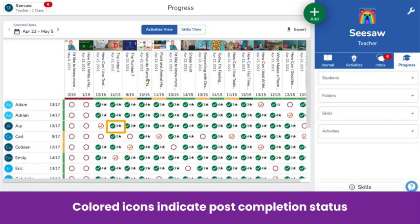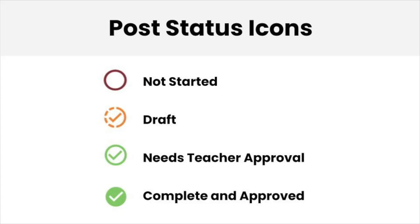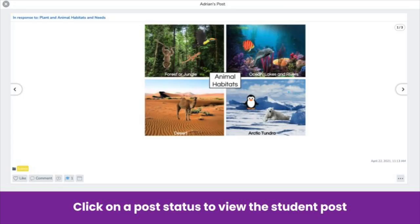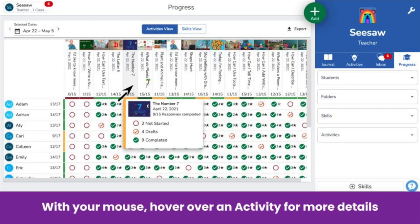The colored icons indicate post completion status. An empty red circle means the student has not yet started the activity. An orange check means the post is saved as a draft. An unfilled green check means the post is waiting for teacher approval. A filled green check means the post is complete and approved. Click on a post status to see the post.